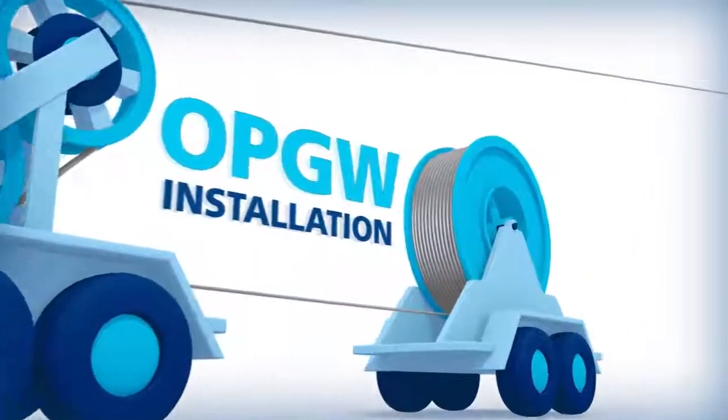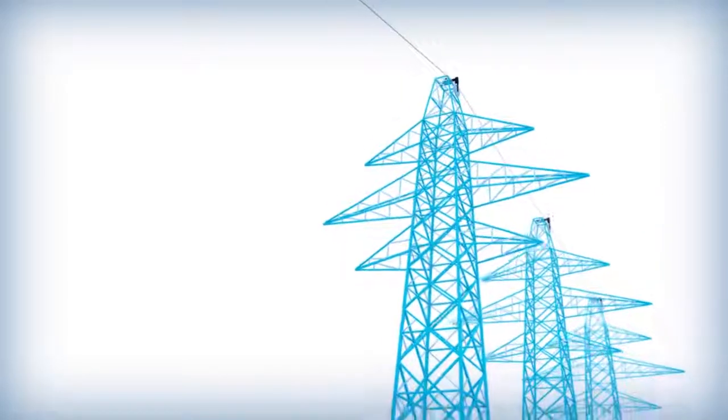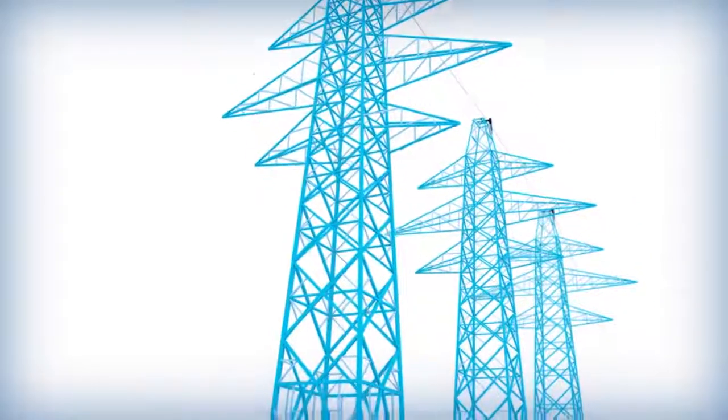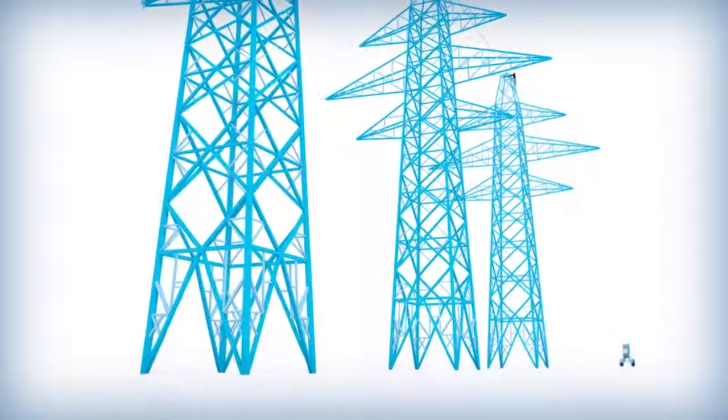OPGW was developed as a communication pathway on transmission lines. It also offers protection against faults and lightning. OPGW can be installed using typical conductor and shield wire stringing methods with minor variations.